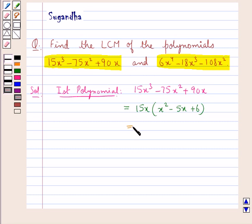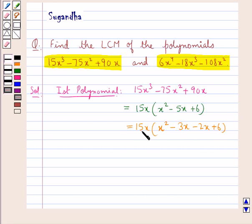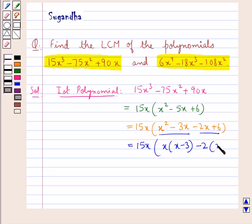Let us now factorize the polynomial x² minus 5x plus 6. This can be written as x² minus 3x minus 2x plus 6, multiplied by 15x. So we get 15x into x(x minus 3) minus 2(x minus 3).